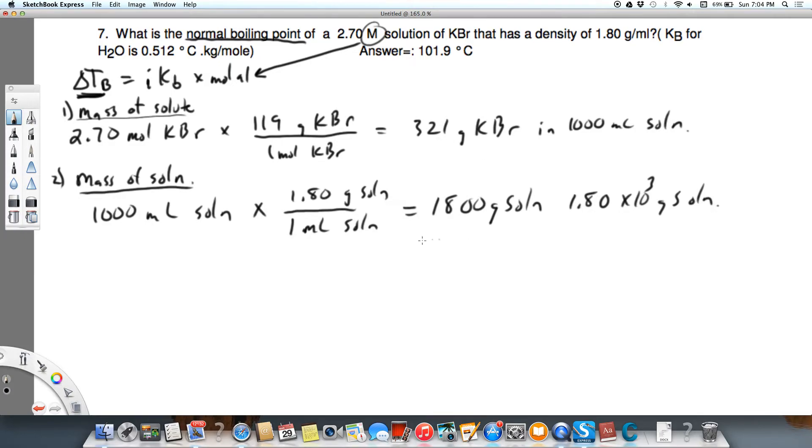Okay, so now what I'm trying to find out is the mass of the water, because I need kilograms of water to figure out molality. Okay, so this is going to be mass of H2O, and that's going to be my 1,800 grams of solution minus my 321 grams of potassium bromide, and that's going to equal 1,479 grams of water.